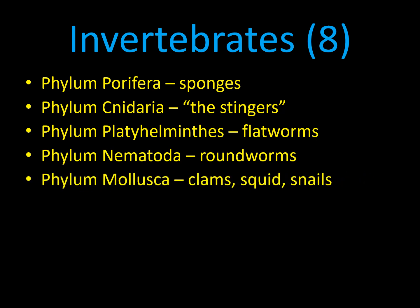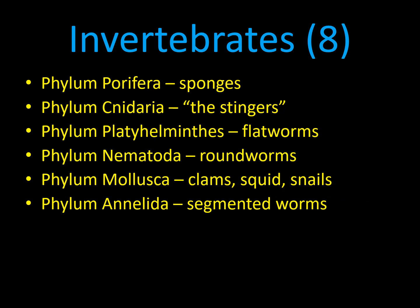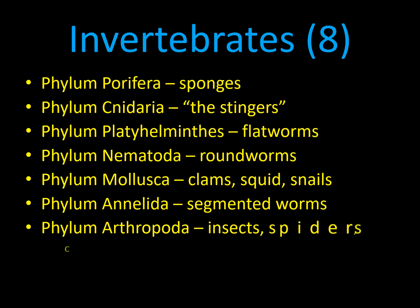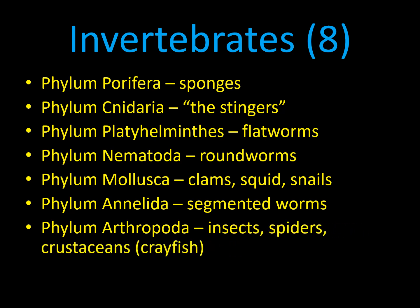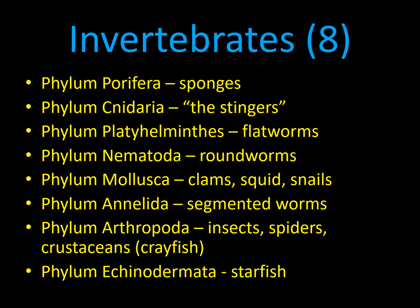Next is phylum Mollusca — these molluscs are clams, squid, and snails. Then we have phylum Annelida — these are the segmented worms. Then phylum Arthropoda, which includes insects, spiders, and crustaceans. You might ask: how can insects and spiders be in the same phylum? Spiders aren't insects — and that's exactly correct. We're going to talk about how that works with the taxonomy. And then we have phylum Echinodermata. We say starfish, but that's kind of a misnomer because they're not fish, so more modern science calls them sea stars.